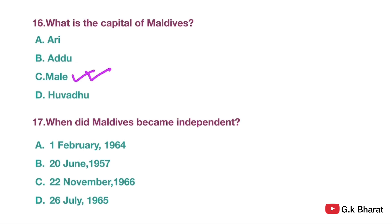Next. When did Maldives become independent? Option A: 1st February 1964. Option B: 20 June 1957. Option C: 22 November 1966. Option D: 26 July 1965. Your correct answer is option D — 26 July 1965.